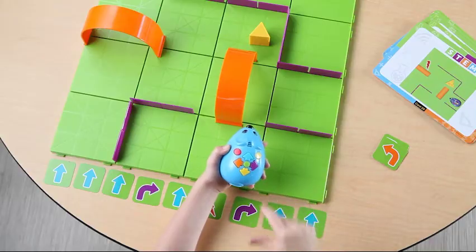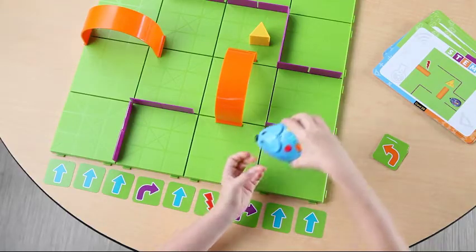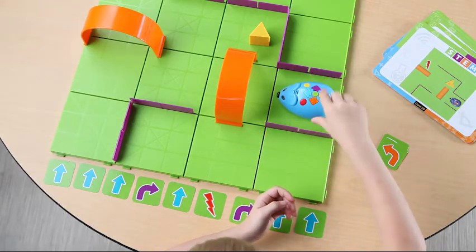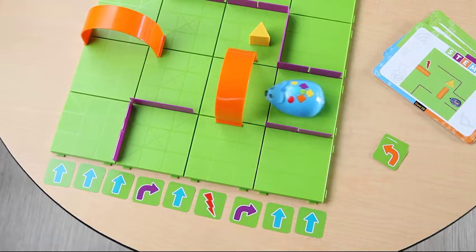Map out your path sequence using the cards, and program that sequence into Colby when you're ready. Now, press the green start button and watch Colby go.